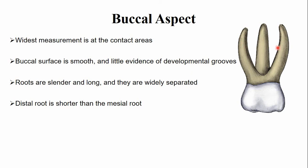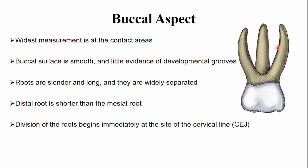The division of the roots begins just below the cementoenamel junction. This portion is the root trunk, and in the deciduous dentition, the root trunk is not well developed — the roots immediately divide into three. This is the same for the mandibular arch. In contrast, in the permanent dentition, the root trunk is quite well developed.